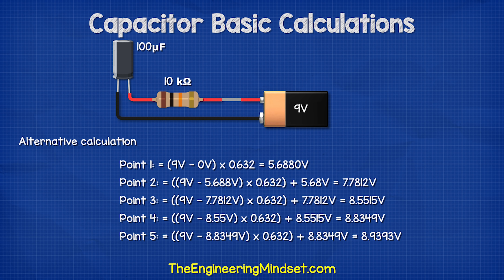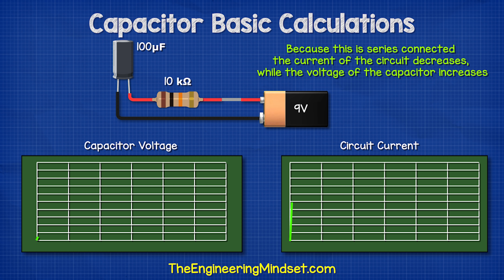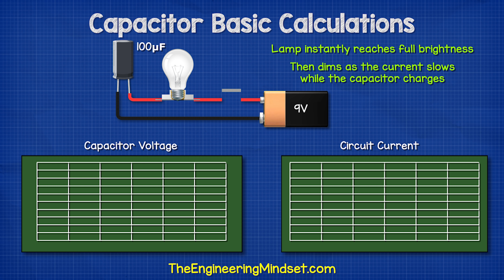If you needed a more precise answer, we could also calculate each point using the full formula. Remember, because this is in series, the current of the circuit decreases while the voltage of the capacitor increases. Once at full voltage, no current will flow in the circuit. If the resistor was a lamp, it would therefore instantly reach full brightness when the switch was closed, but then becomes dimmer as the capacitor reaches full voltage.